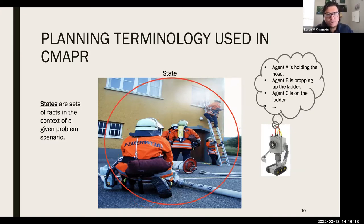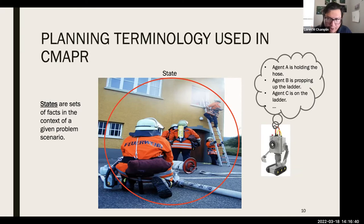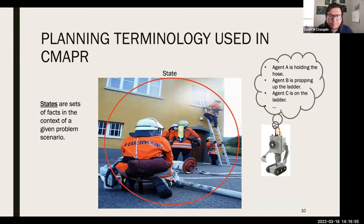States are sets of facts in the context of a given problem scenario. In a search and rescue scenario with firefighters, the state includes all the facts true in that scenario — for example, Agent A is holding the hose, Agent B is propping up the ladder, Agent C is on the ladder. Depending on how detailed we want to simulate the problem scenario, that's how complex the state is. This relates to what I'll discuss later about the cost versus expressivity trade-off.